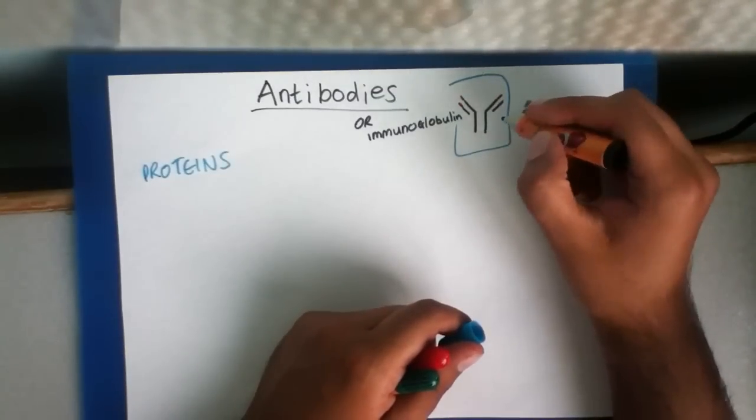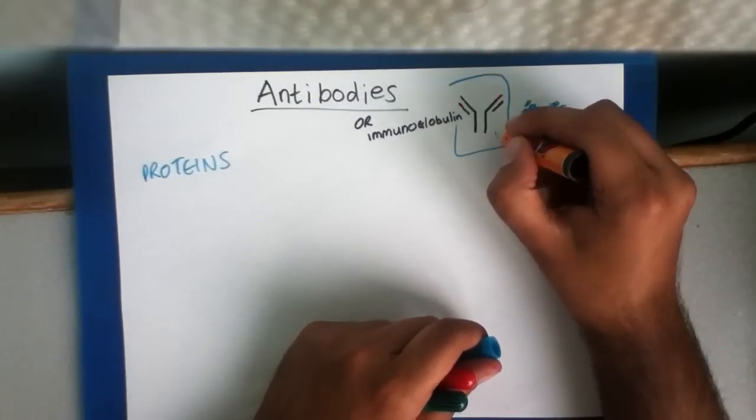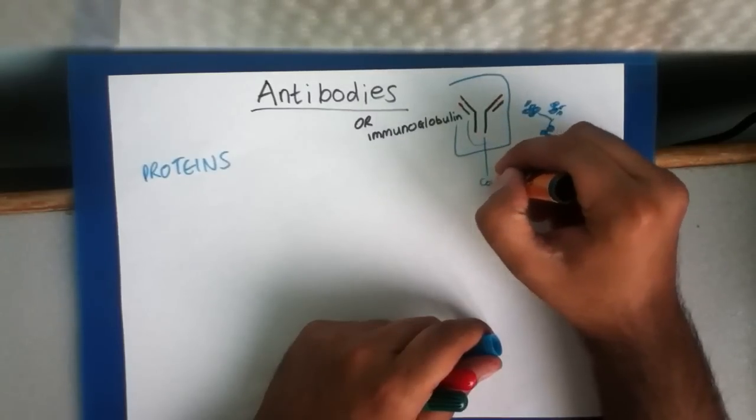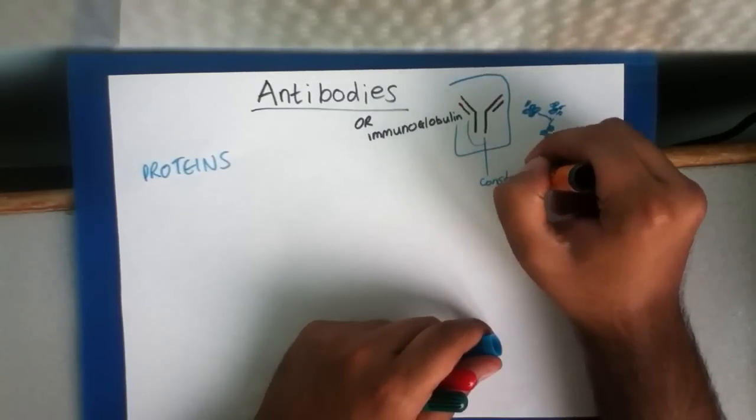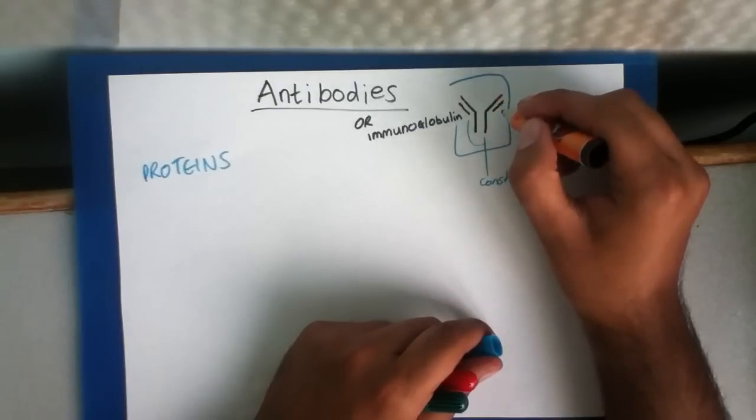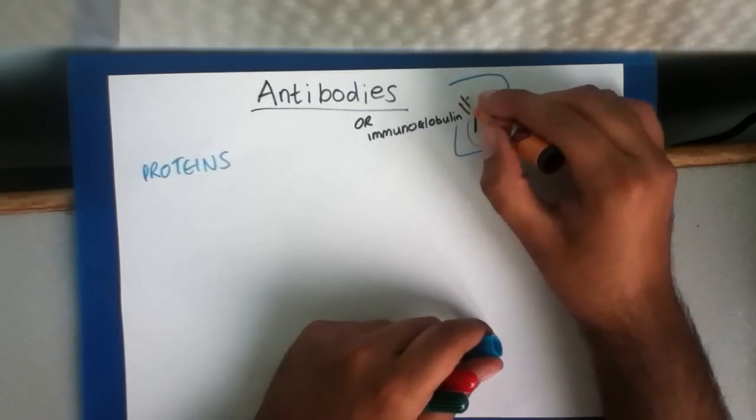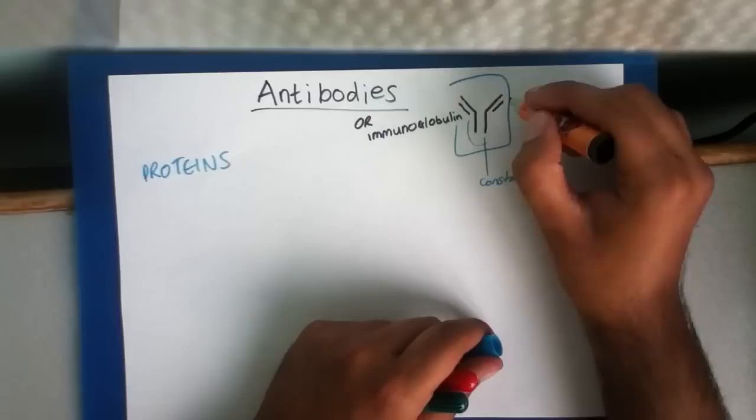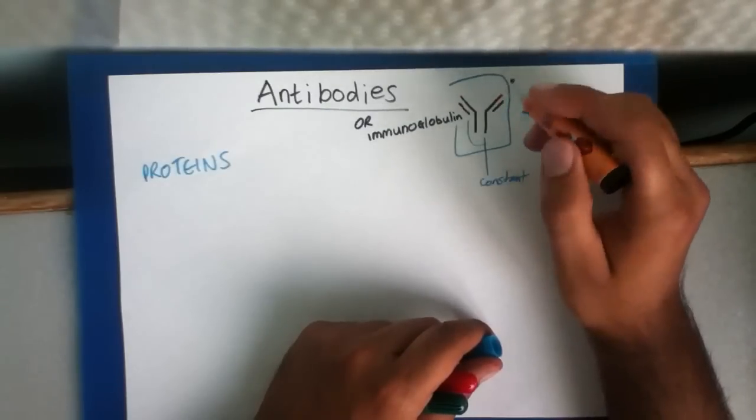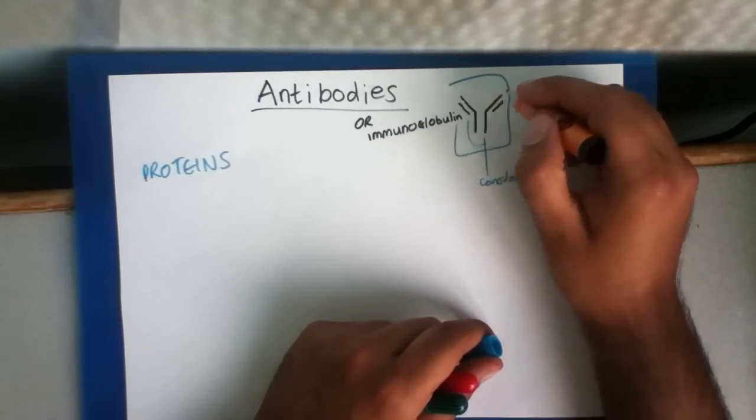Now remember, they are proteins. We have this region here, which is the constant body. So in all antibodies, this is usually going to be the same. We have these little red tips. The ends of them are red. These are the variable bodies, and between different classes of antibodies, they can change in terms of their structure.